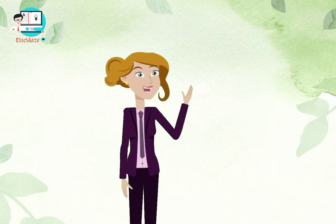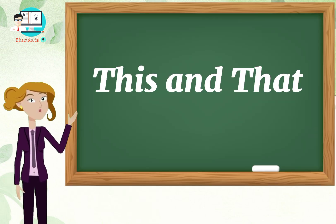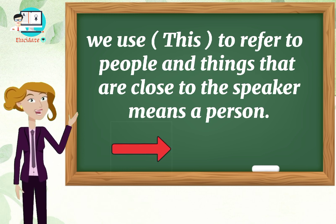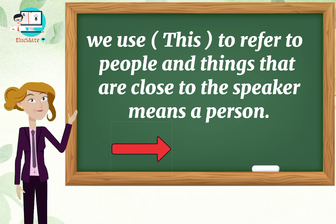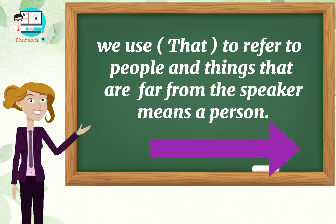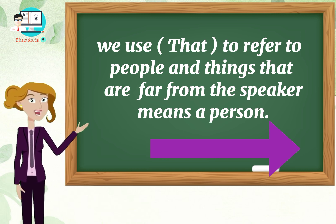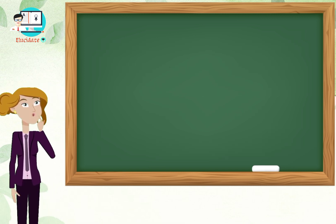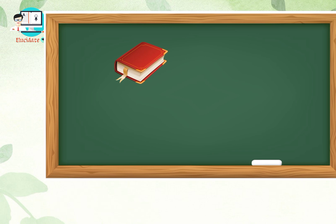Hello everyone, hope you all are doing great. Today we are learning this and that. We use 'this' to refer to people and things that are close to the speaker, and we use 'that' to refer to people and things that are far from the speaker. Let's have some examples, as you can see.